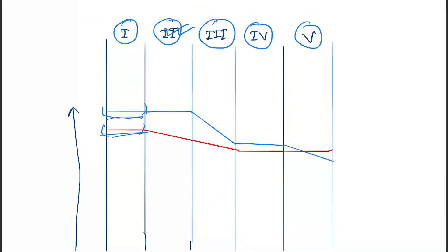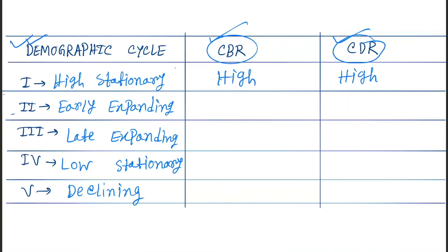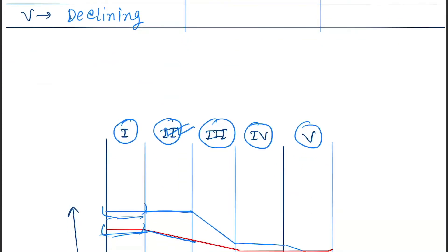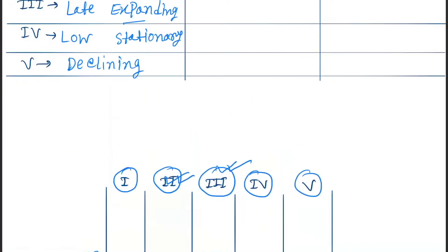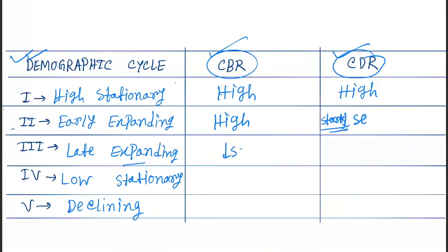In the early expanding phase — phase two — CBR remains high but starts to decrease. Next is the late expanding phase — phase three — where CBR also starts to decrease and CDR is already decreasing, so both are now decreasing.